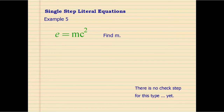Now let's look into single-step literal equations. Literal equations are equations that only have, or mostly have, variables. We would isolate one of the variables — the one being asked — and try to get rid of all the other variables using inverse order of operations. In order to find M, we are going to see what is next to M. In this problem, M has been multiplied by C squared, so in order to leave M alone, you need to undo the multiplication by dividing each side by C squared.